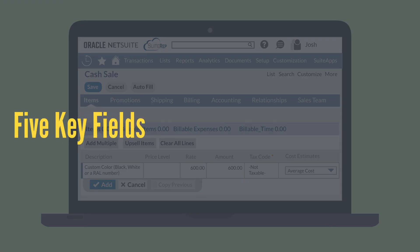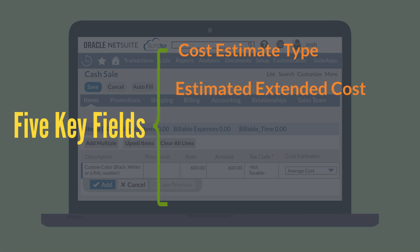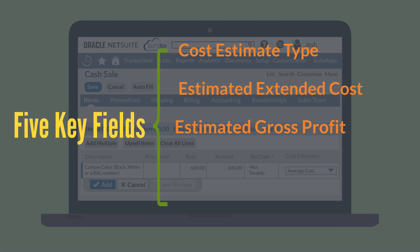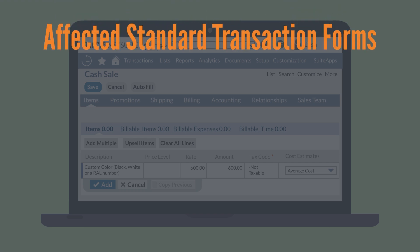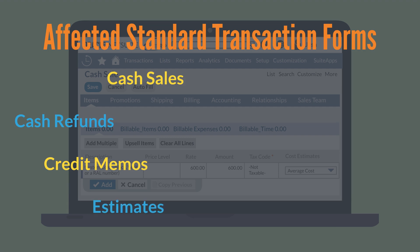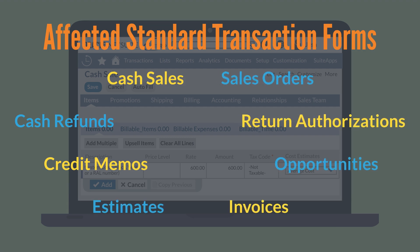There are five key gross profit fields that are added to standard transaction forms when you enable the gross profit feature: cost estimate type, estimated extended cost, estimated gross profit, estimated gross profit percent, and estimated unit cost. You'll be able to view these fields on the standard transaction forms for cash refunds, cash sales, credit memos, estimates, invoices, opportunities, return authorizations, and sales orders.